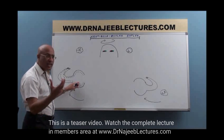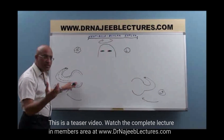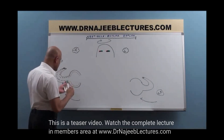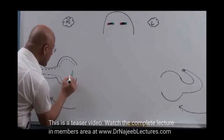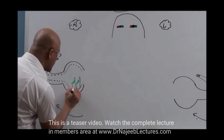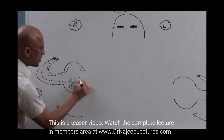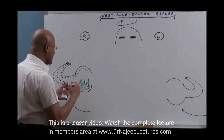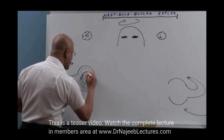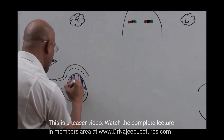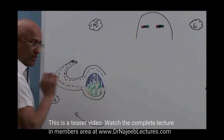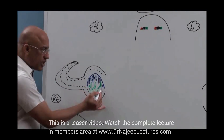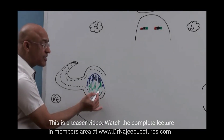There is a special structure here — a collection of sensory cells called the crista, and those sensory cells are called hair cells. The hair cells have one large hair called the kinocilium and smaller ones called stereocilia. At the top of these hair cells, there is a gelatinous material — a cap called the cupula. The collection of hair cells is called the crista ampullaris because it is present in the ampulla.